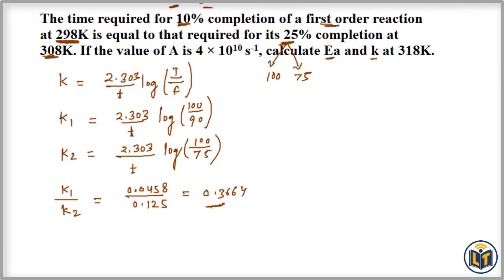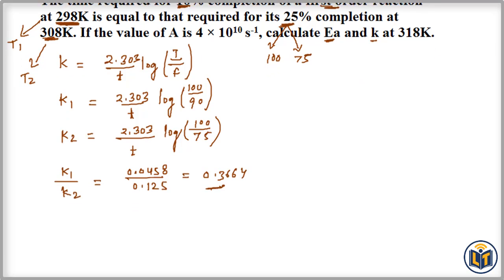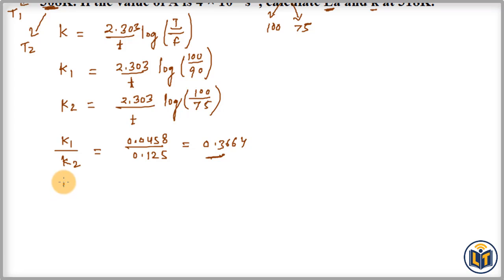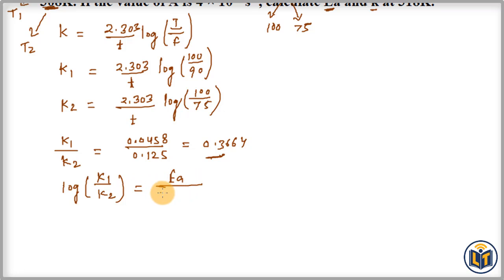Now we apply the Arrhenius equation. With T1 = 298 K and T2 = 308 K, the equation is: log(K1/K2) = (Ea / 2.303R) × (1/T2 − 1/T1), where Ea is the activation energy we want to calculate.